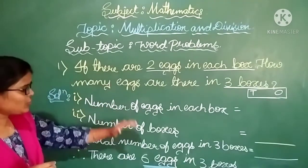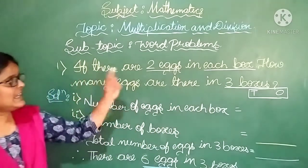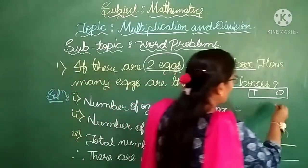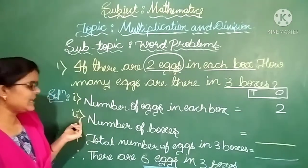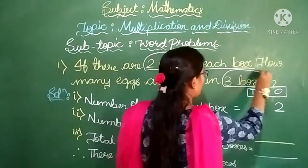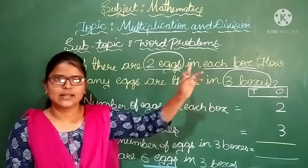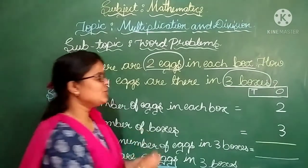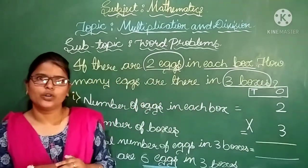Solution. First point: number of eggs in each box — there are 2 eggs. Write down this 2 under the 1s column, because 2 is a single digit number. Second point: number of boxes — there are 3 boxes totally. Write down this 3 under the 1s column, because 3 is also a single digit number. Then put the sign of multiplication.